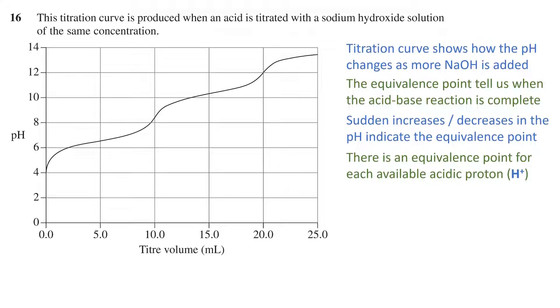So basically what we are doing in this question is counting the number of sharp increases in the pH to find the number of acidic protons. If we look at the start of the curve, there is a relatively sharp increase in the pH. However, this is the first time the strong base enters the solution.